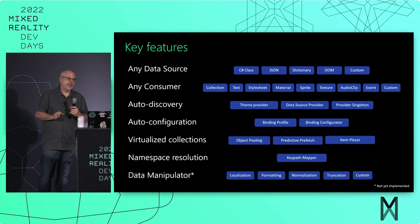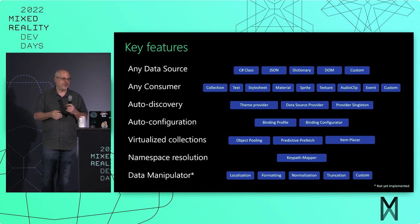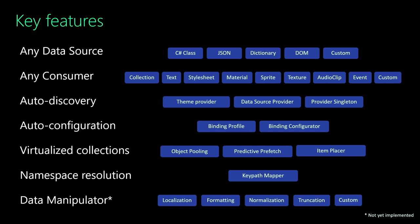Just to give you a rundown of some of the key features: data source is on the side of where the data is coming from. Out of the box, we support any C-sharp object which includes scriptable objects. We support JSON. We support dictionary — great for putting a bunch of key-value pairs for testing, or use it for runtime state. Just put stuff in a key dictionary and every time you change any of those values, they will update whatever is listening to those values.